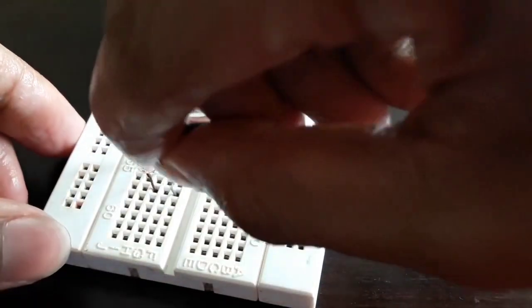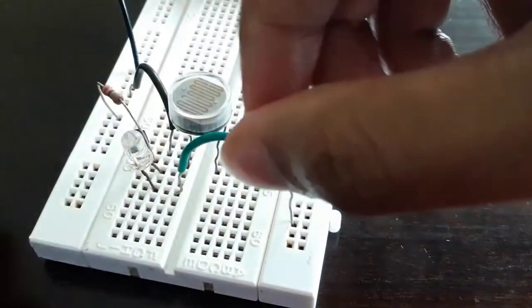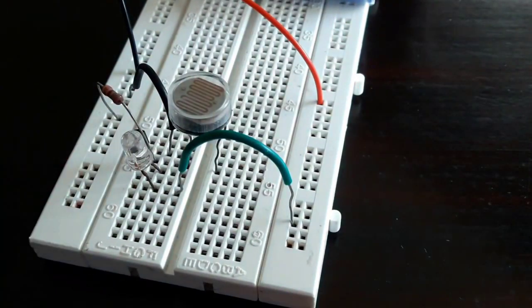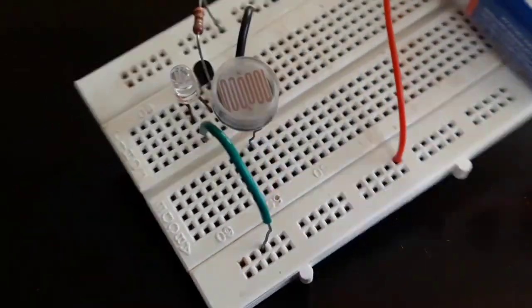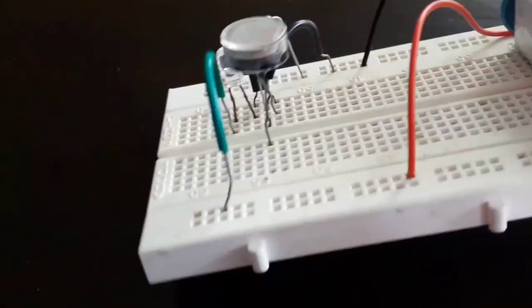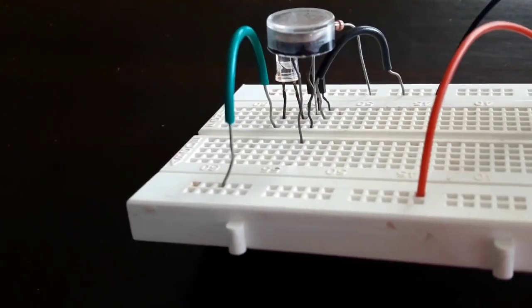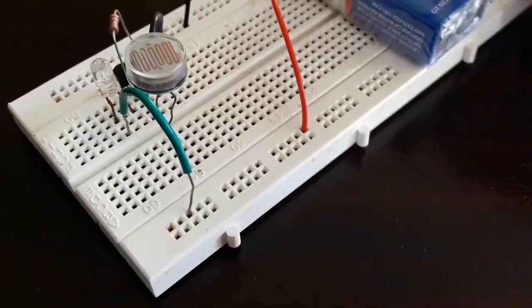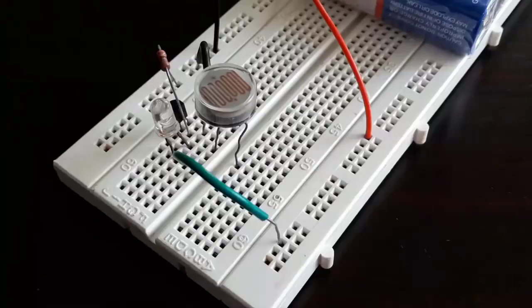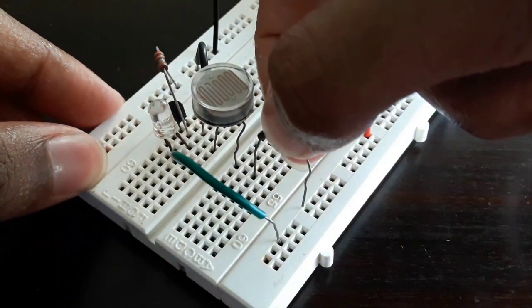Now connect a wire from the LED to the positive side of the breadboard. Connect another wire from the LDR to the positive side of the breadboard.